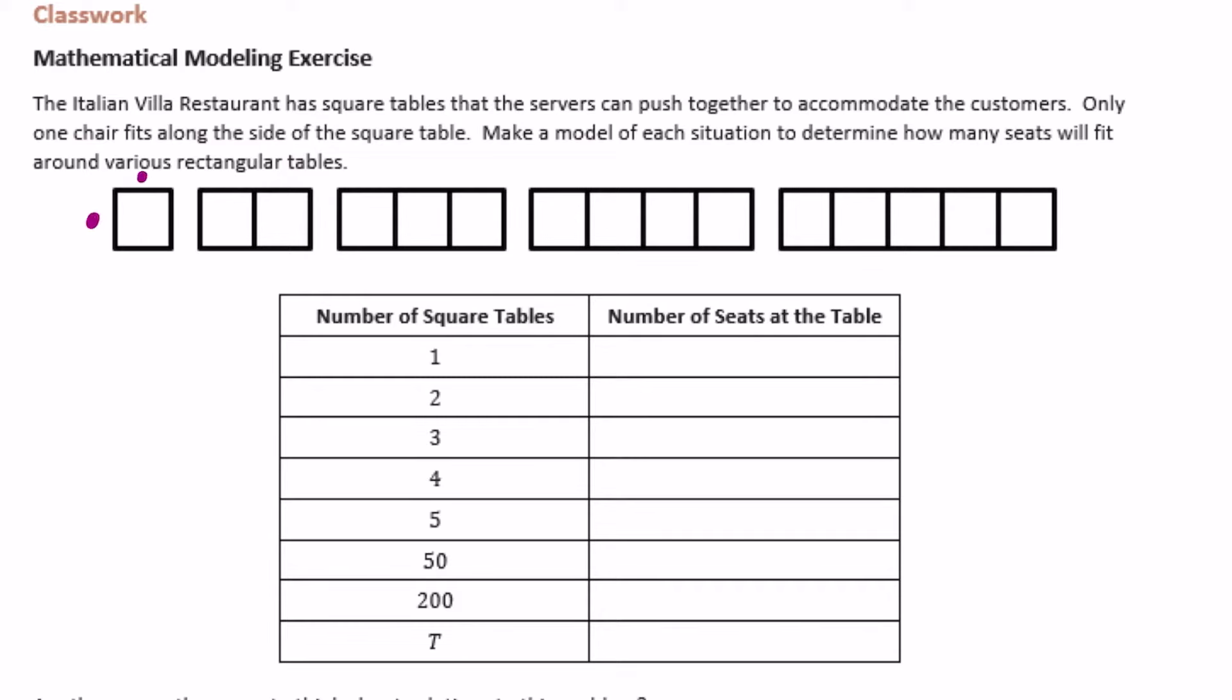So there will be one chair, two chairs, three chairs, four chairs. So then with two tables pushed together, we'd have one, two, three, four, five, six chairs. With three tables, there would be one, two, three, four, five, six, seven, eight chairs.